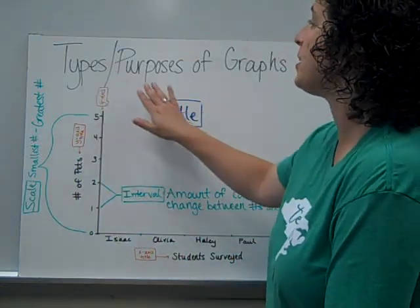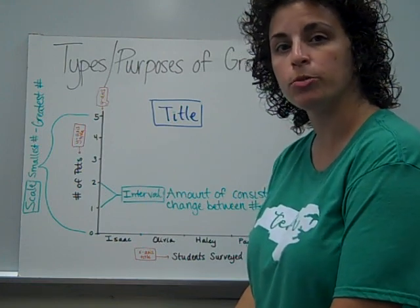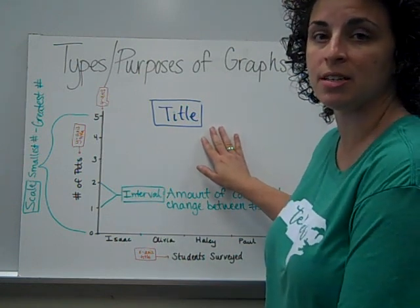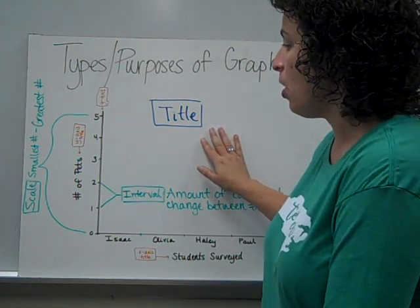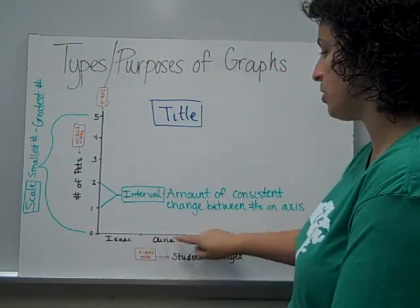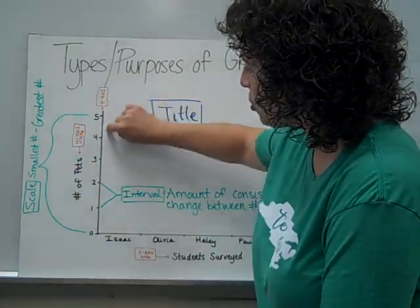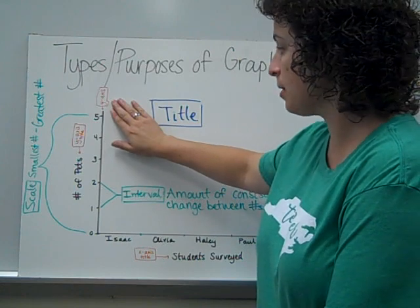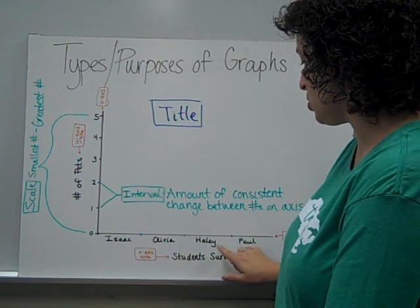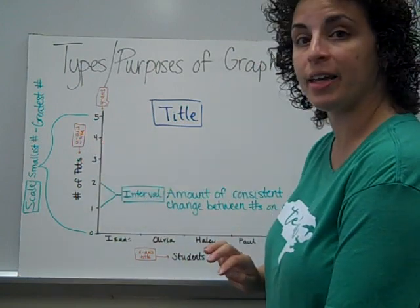Today we're going to take a look at different types and purposes of graphs. And while the graphs that we're taking a look at are different, they do share similar characteristics. For example, every graph will have a title that lets us know what it's going to be about. Graphs are made from two axes. We have the x-axis that runs left to right, and we have a vertical axis that is our y-axis. Each axis usually comes with an additional title that lets us know what the words or numbers we're seeing are telling us.